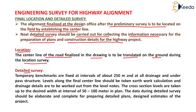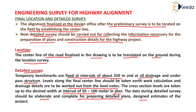In the detailed survey, temporary benchmarks are fixed at intervals of about 250 meters and at all drainage and underpass structures. Levels along the final center line are taken, and earthwork calculations and drainage details are worked out from the level notes. Cross-section levels are taken up to the desired width at intervals of 50 to 100 meters in plan. The data during the detailed survey should be elaborate and complete for preparing detailed plans, design estimates of the project.